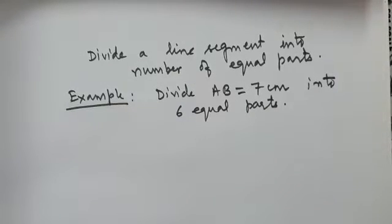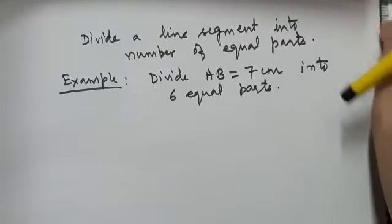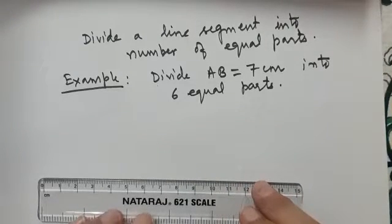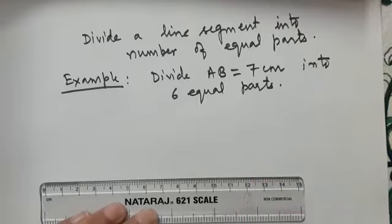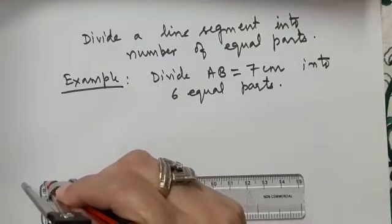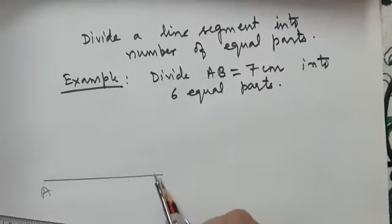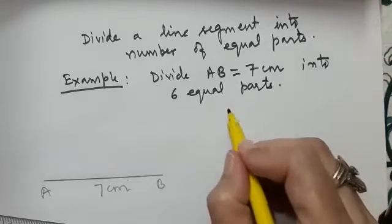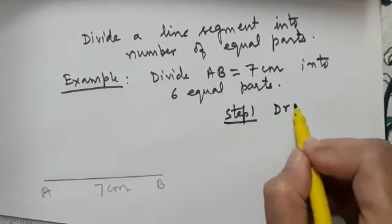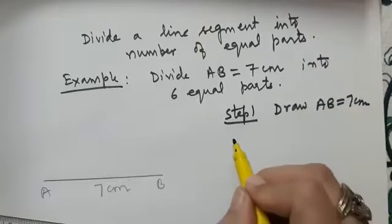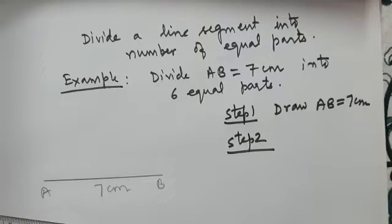So I will be writing the steps also. Step 1 is with the help of a ruler and a pencil we will be drawing a line segment AB which is 7 cm. Very simple. So step 1 is very simple. Draw AB which is 7 cm. So let us write this also. Step 1: Draw AB equals 7 cm.